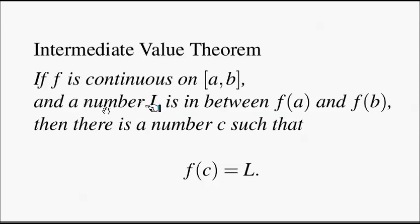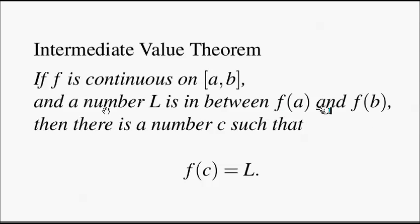If a number is in between these two values of the function — and sometimes f(a) is greater than f(b), that is why it is phrased this way — if the number is in between these two, then there will be some function value that becomes exactly that given value.